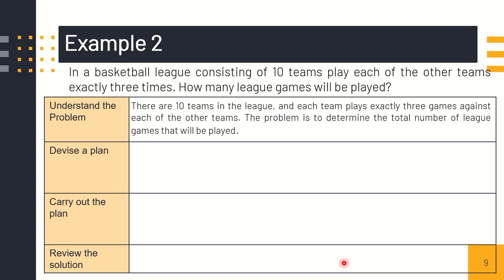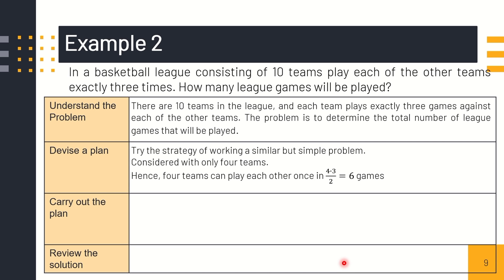What is the appropriate strategy? Using the Polya problem-solving strategy, what can we use? We can use this strategy of working a similar but simpler problem. Consider with only four teams. For example, four teams will play. Hence, four teams can play. Since each of the four teams will play a game against each of the other three, we might conclude that this would result in four times three equals twelve games.